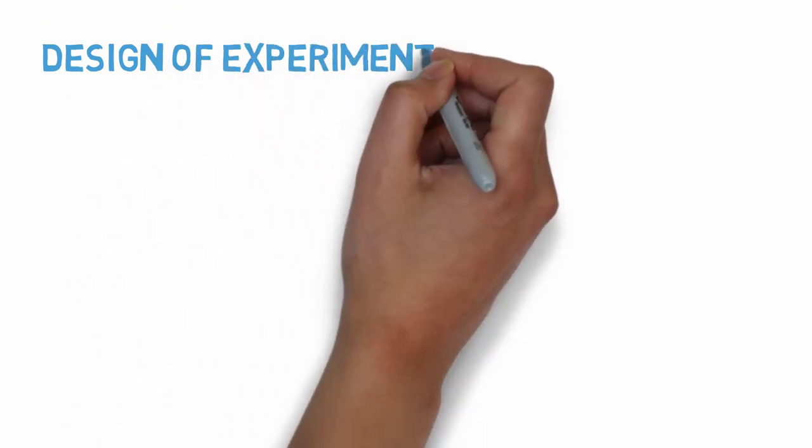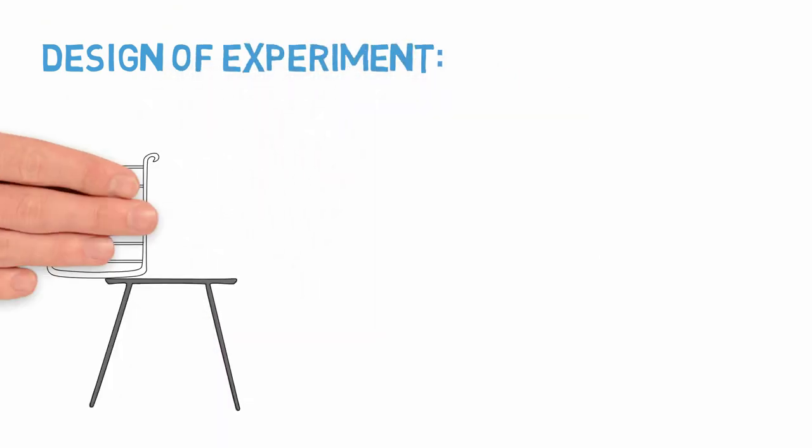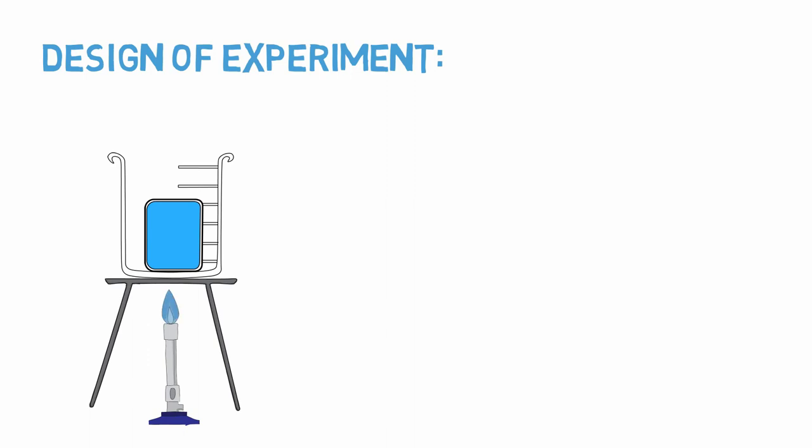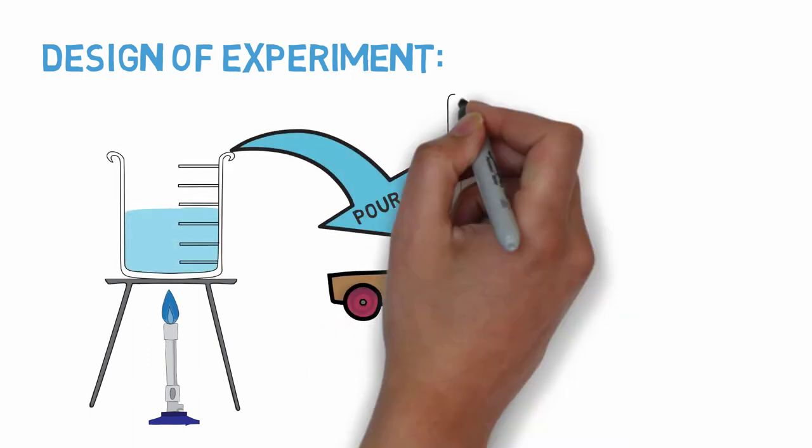Now let's think about designing an experiment for our hypothesis. We could take a solid material and attempt to reshape it by melting it, pouring it into a mold, and allowing it to cool.